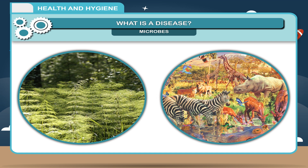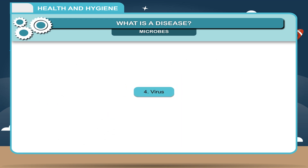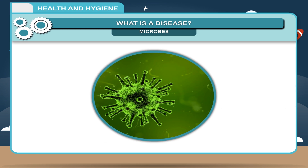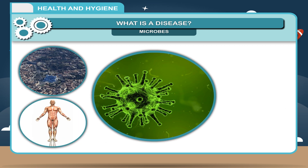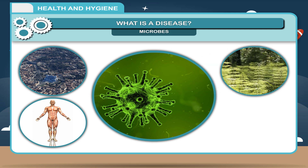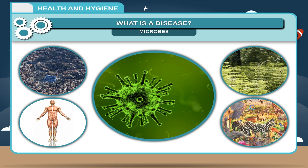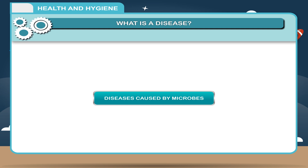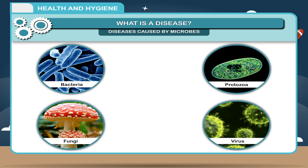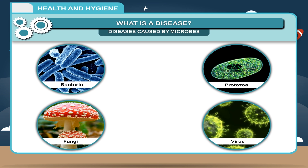Dark and damp places are suitable for the rapid growth of fungi. Viruses are found everywhere. They become active when they enter the body of a plant or an animal. There are some types of bacteria, protozoa, fungi and virus that cause various diseases.